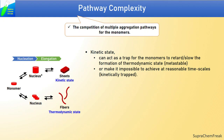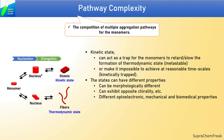If the kinetic state is metastable, then it can act as a trap for the monomers to retard or slow the formation of thermodynamic state. Or if it is kinetically trapped, it can make it impossible to achieve at reasonable time scales, as we discussed in the previous video. Sometimes, the kinetic states exhibit interesting properties different than thermodynamically stable states. For example,